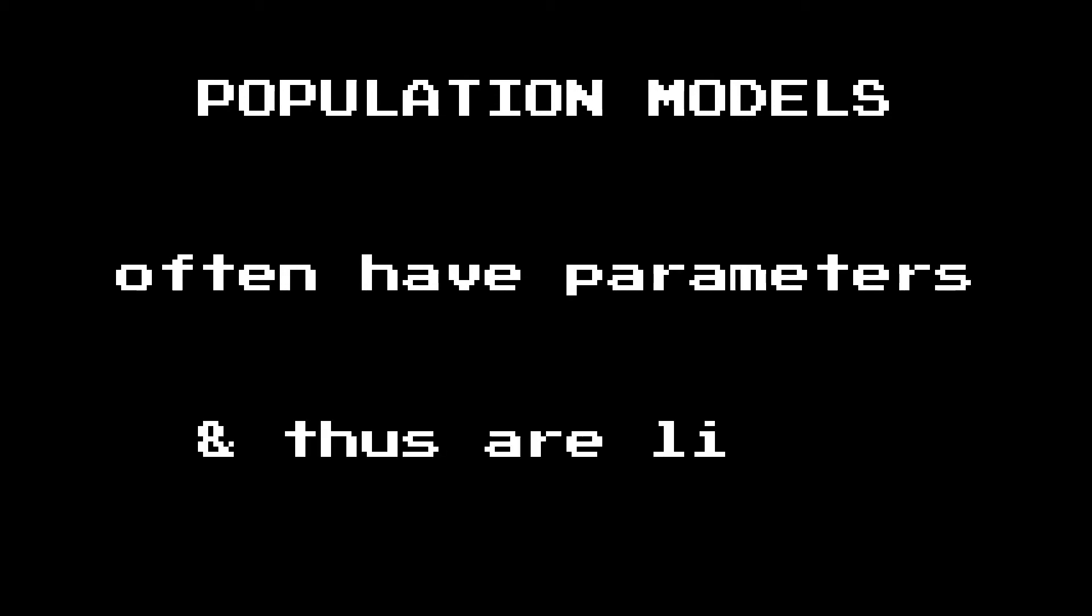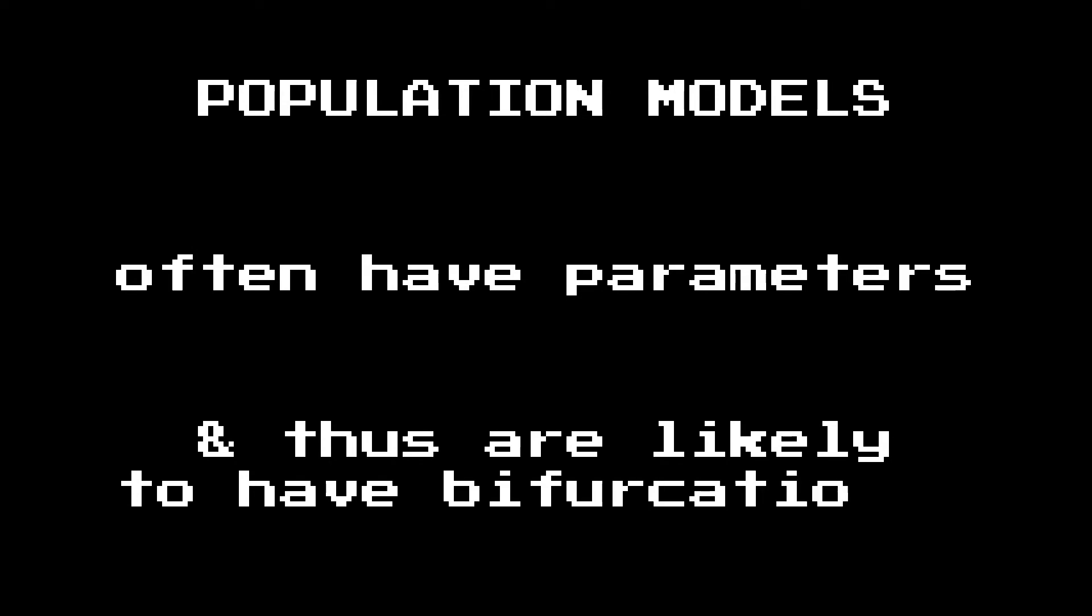Many of the population models that we have looked at in a previous chapter also have parameters, and that means that they're likely to have some bifurcations going on as well. Let's take a look at some of those examples.